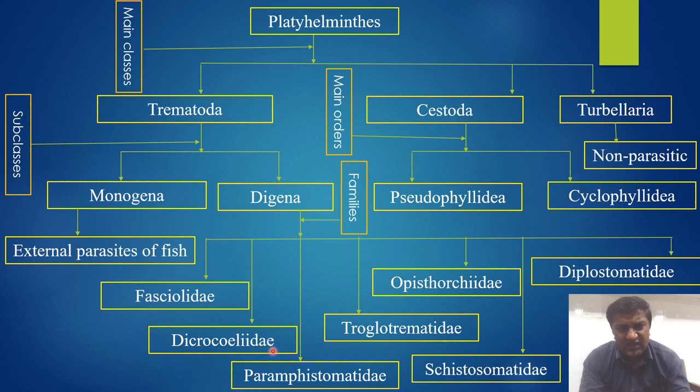Paramphistomatidae, Troglotrematidae, Opisthorchiidae, Schistosomatidae, and Diplostomatidae. And Cestoda, this main class, is divided into two main orders.